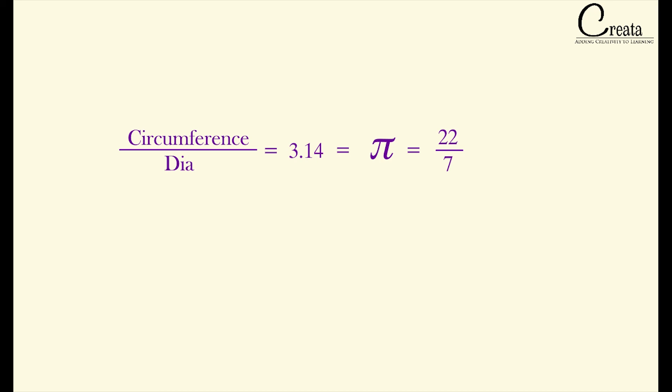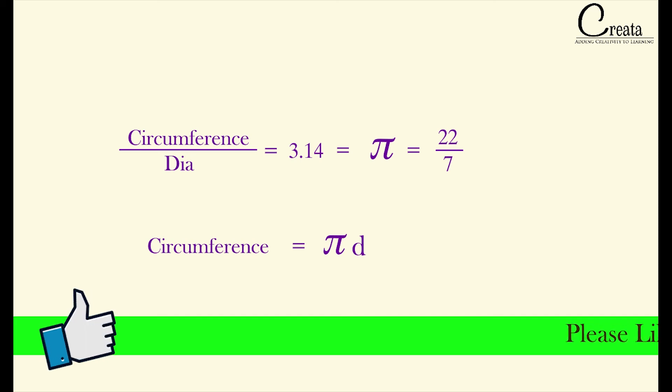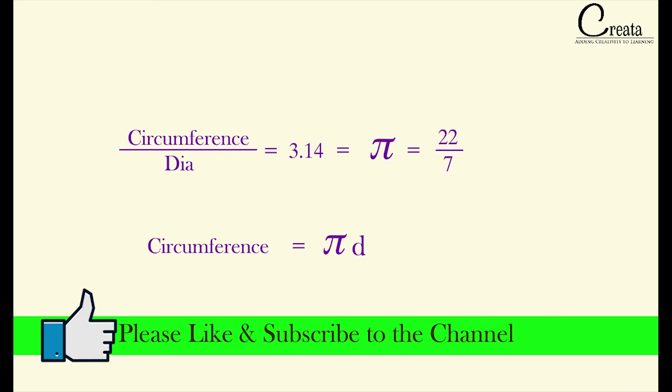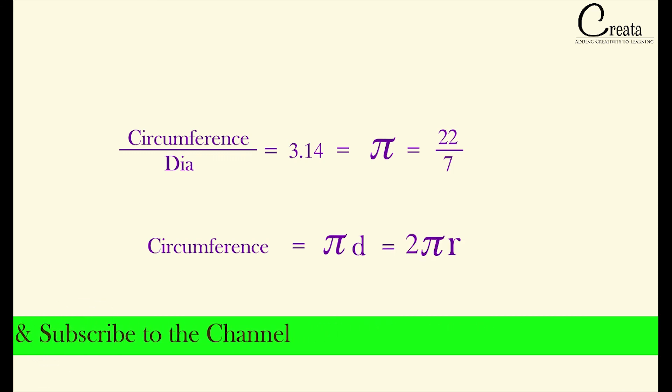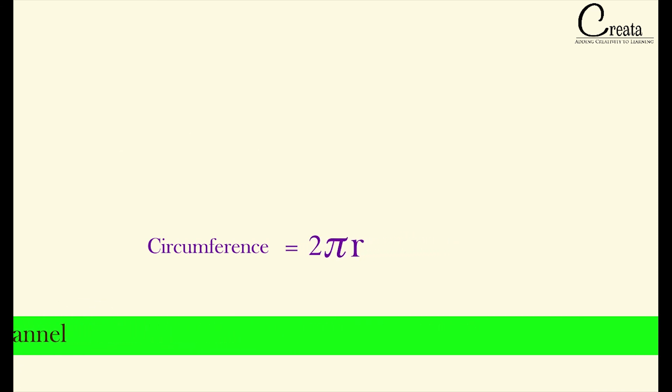Pi has much greater significance but we will limit ourselves to this limit only. So we got circumference over diameter is equal to pi. So here comes the formula of circumference. That is circumference is equal to π into diameter. And we know diameter is twice of the radius. That is circumference is equal to 2πr. This is the famous formula of circumference of circle.